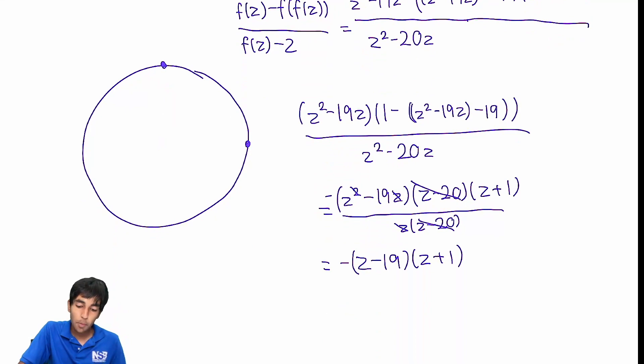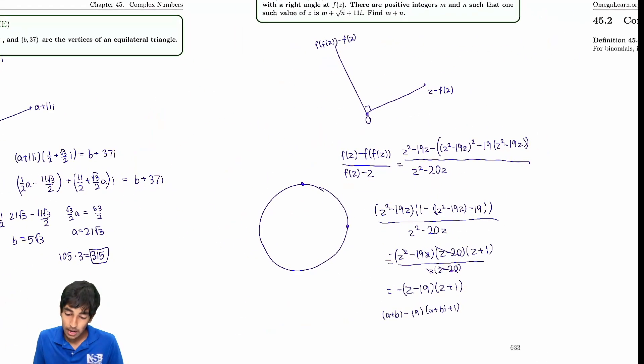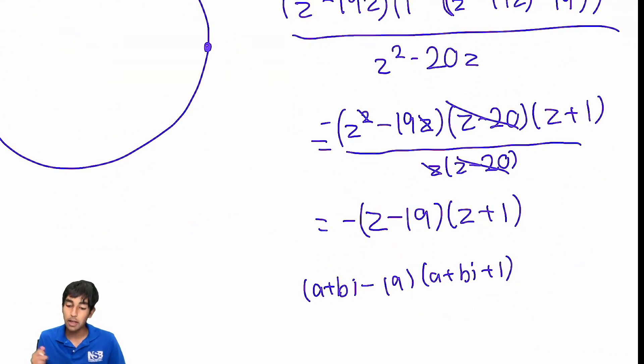And now we kind of go back to our a plus bi trick. Let's make this (a plus bi) minus 19, and then (a plus bi) plus 1. Because now we can see that once we expand all of this out, we need only to have an imaginary part. And we can just ignore the negative, it doesn't really matter. We're just trying to say this thing has to be imaginary. What does that mean?